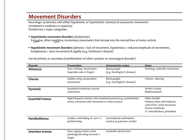Hypokinetic movement disorders include akinesia — lack of movement — hypokinesia, which is reduced amplitude of movements, bradykinesia or slow movement, and rigidity, which we see in Parkinson's. These can be primary, resulting from damage to the basal ganglia, or secondary as a manifestation of some other systemic or neurological disease.